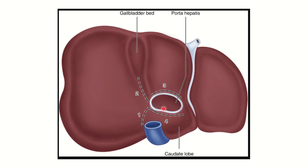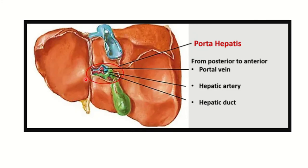The porta hepatis contains three important structures: the portal vein, the hepatic artery, and the hepatic duct. The arrangement from posterior to anterior is: first the portal vein, then the hepatic artery, and then the hepatic duct. Since two of them have 'hepatic' in the name, they are easy to remember; the one to memorize separately is the portal vein.